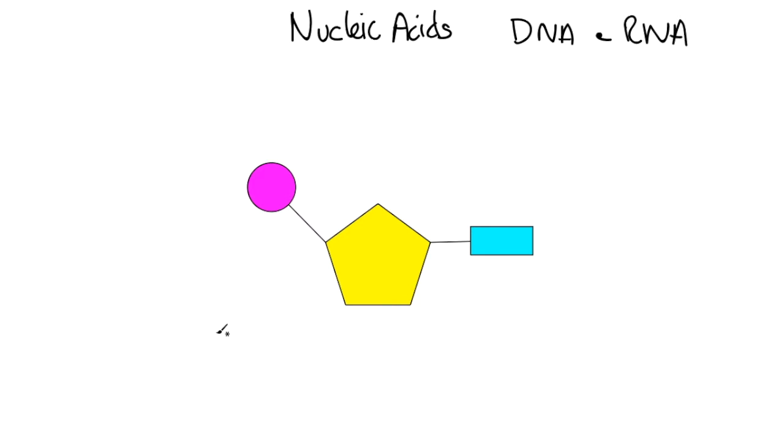What I've drawn down here already is the basic unit of both RNA and DNA. So this is the monomer of DNA and RNA. Lots of these stuck together makes up the larger molecule, and this unit is called a nucleotide.